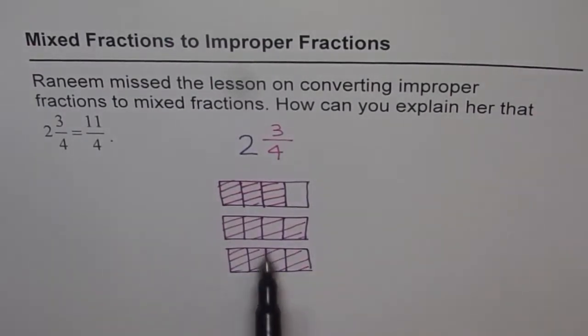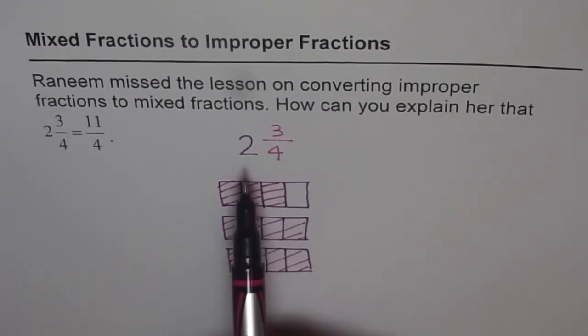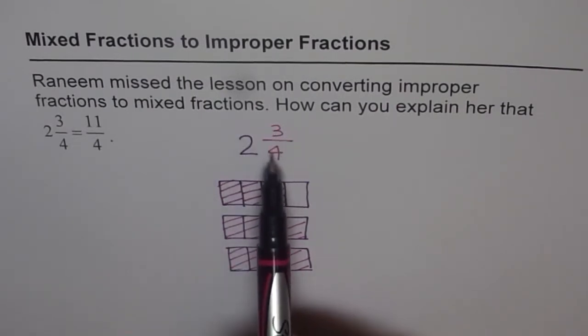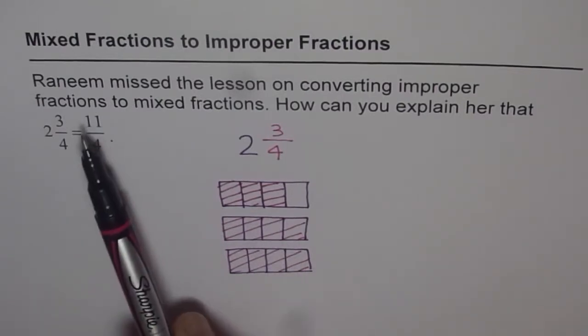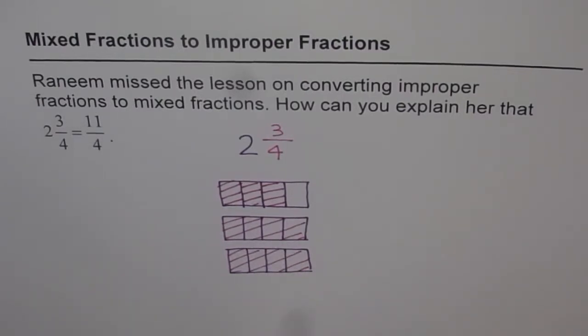That is 2 wholes and 3 fourths, or we can write them as a mixed fraction which is 2 3/4. Normally we just call it a mixed number, since we have a whole number and a fraction part to it. Now the question is, is it equal to 11/4 or not?